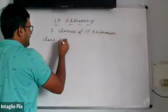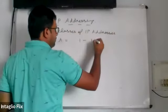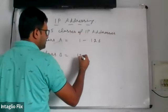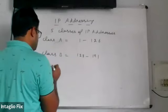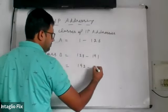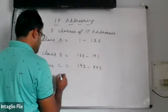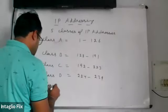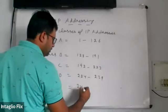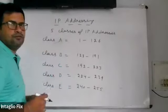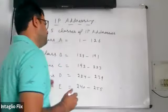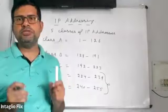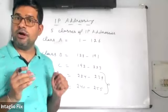Class A is from 1 to 126. Class B is from 128 to 191. Class C is from 192 to 223. Class D is from 224 to 239. Class E is from 240 to 255. Out of these 5 classes, we will not be using Class D and E because these are reserved for research and broadcasts. We will only be using Class A, B, and C.